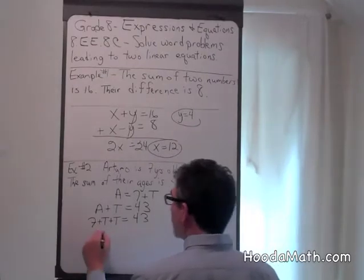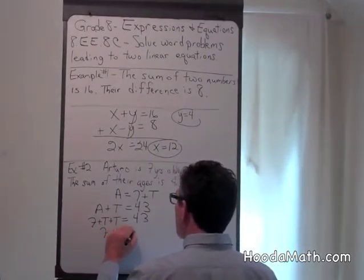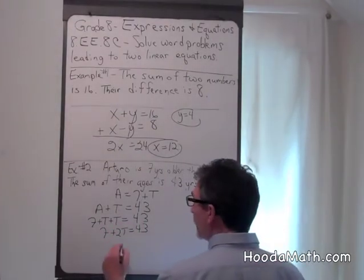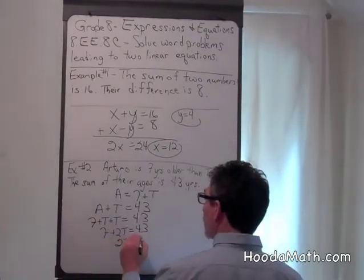Adding the like terms, 7 plus 2t equals 43. I'm going to subtract 7 from both sides. 2t equals 36.